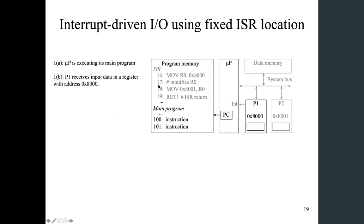So we have a program memory and this is the main program. The microprocessor is executing this main program, so the program counter points to address 100. We also have in the program memory an interrupt service routine located at address 16 — meaning the starting address of this ISR is at 16. Of course there are often more than one instruction, so we have 16, 17, 18, 19, and so on, to the last instruction which is return from ISR — RETI.